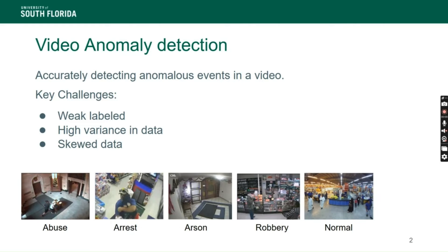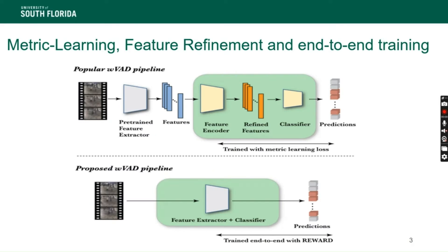Beyond that, we have high variance in the data. It is distributed among many different classes like robbery, arson, arrest, abuse, and several others. The data is also heavily skewed because there is a lot more normal data than anomalous data.